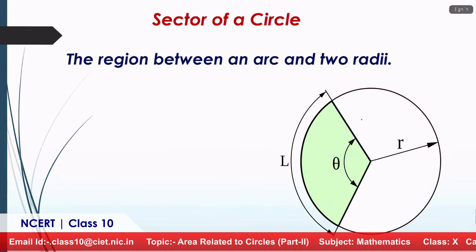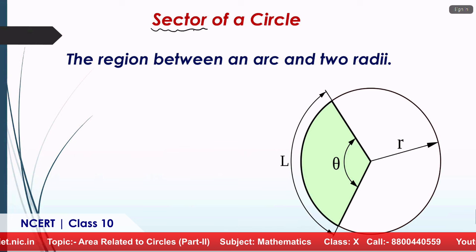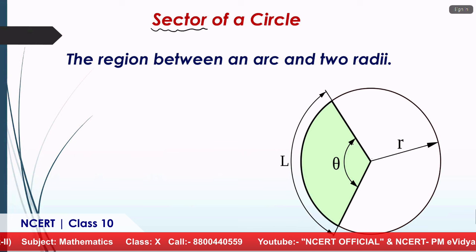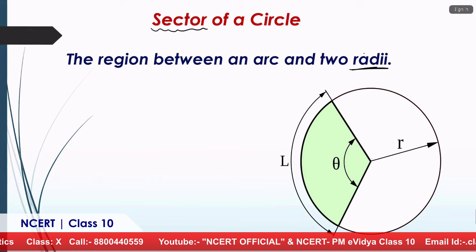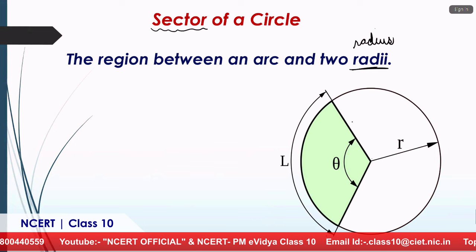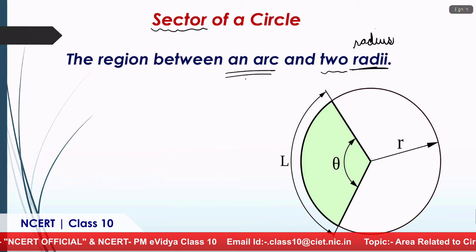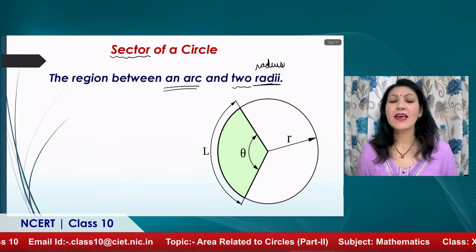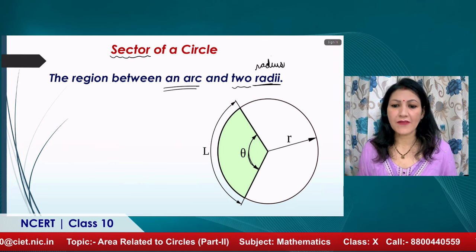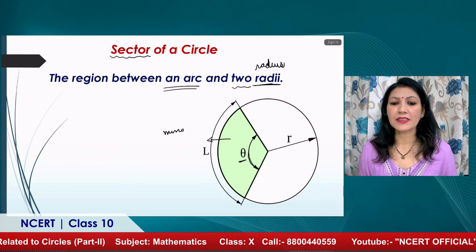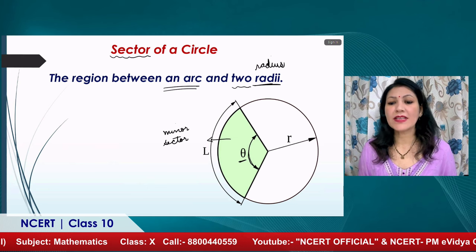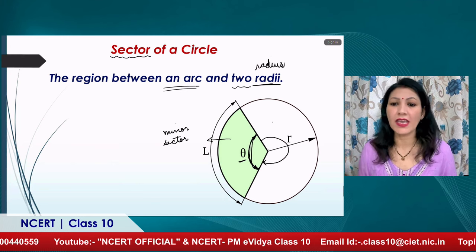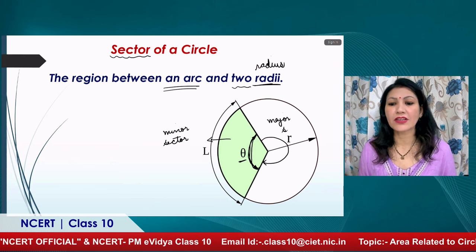Now let us discuss the sector of a circle. If we have two radii of a given circle — radii being the plural of radius — and an arc of the circle, then the area bounded by these two radii and an arc is known as the sector of the circle. If the central angle theta is less than 180 degrees, it is the minor sector. If the angle is greater than 180 degrees, it is the major sector.